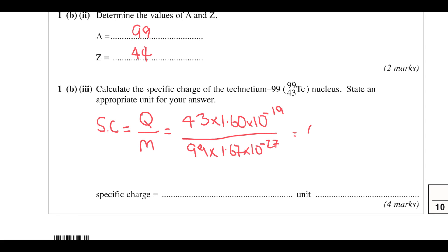That gives us an answer of 4.16 times 10 to the 7 coulombs per kilogram. The correct unit is charge over mass. That concludes question one — fairly straightforward.